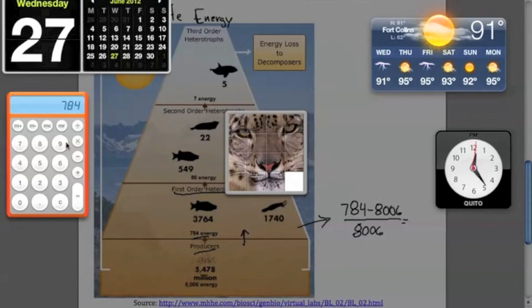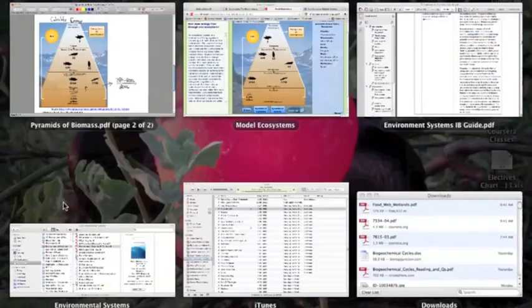So if we take 784 minus 8006 divided by 8006, you'll notice we get a negative value of 0.9 or if we want to do our percentage multiply it by 100. So that gives us approximately 90.2 percent.